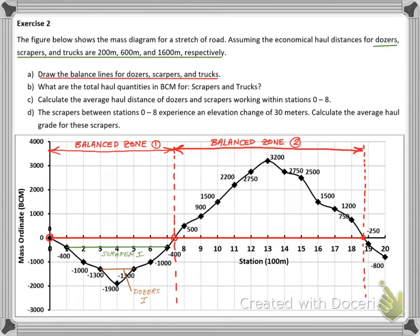The 600 meter economical haul distance of the scrapers can fit under the diagram as shown to mark the sub zone of the scrapers in the first big zone.